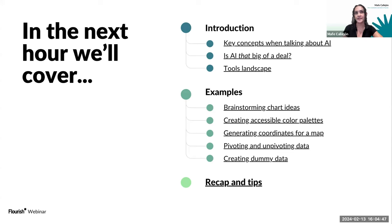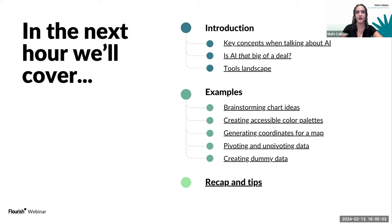The five exercises are: brainstorming chart ideas, creating accessible color palettes, generating coordinates for a map, pivoting and unpivoting data, and creating dummy data. Last but not least, there will be a recap with tips and tricks. I'll be stopping along the way to answer questions from the chat, but there will also be time at the very end, so don't worry.